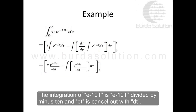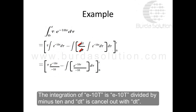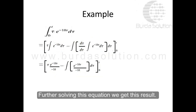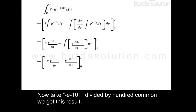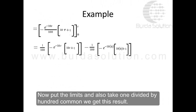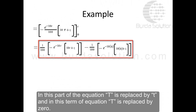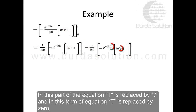After applying integration by parts, the integration of e^(−10t) is e^(−10t) divided by −10, and dt cancels out with dt. Further solving, we take −e^(−10t)/100 as a common factor. Putting in the limits from 0 to t: t is replaced by t in one term, and t is replaced by 0 in the other term.